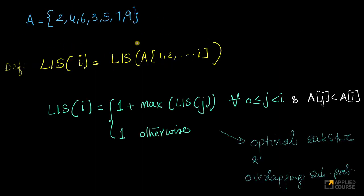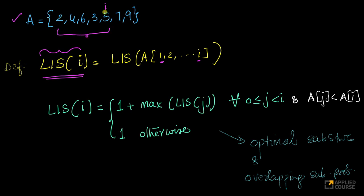Let me explain the solution. This is my array, and let me define a function LIS(i), which represents the length of the longest increasing subsequence from element a[0] to a[i]. Using C/C++ or Java indexing, it's from the 0th element to the ith element. So from the 0th element to the ith element, the longest increasing subsequence is represented by LIS(i).